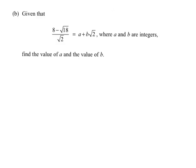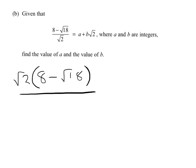Now part B requires us to rationalise the denominator so that there is no surd in the denominator. To do that, you need to know the technique, which is to multiply the top and bottom of our fraction by root 2.